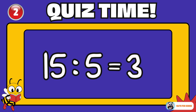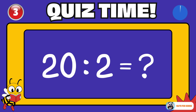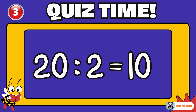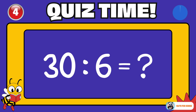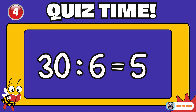You're on fire! Can you do this one? 20 divided by 2 is equal to? 10. 30 divided by 6 is equal to? 5.